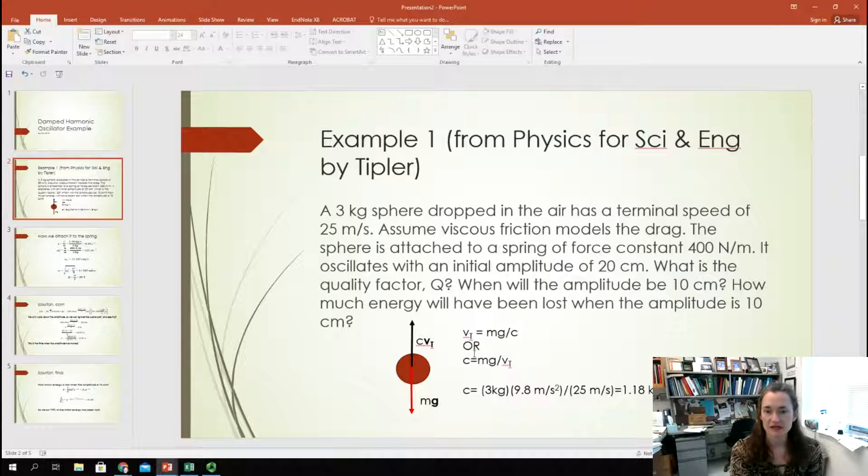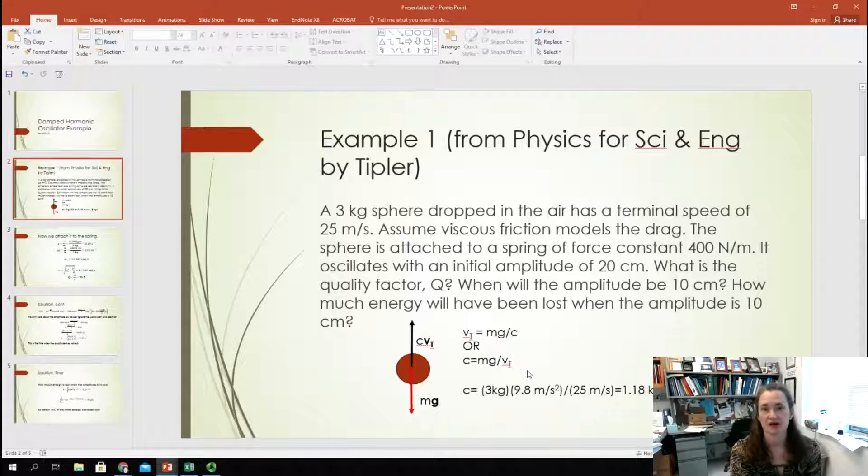So, I can set those magnitudes equal and I can either solve for the terminal velocity, which is maybe a little bit more common of a problem, or I can solve for c. Basically, mg is equal to cv_terminal, so that means that the damping coefficient c will be equal to mg divided by v_terminal.